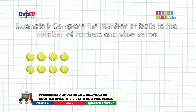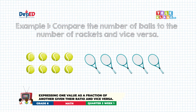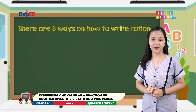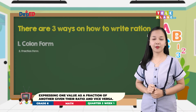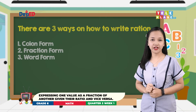Example number one: Compare the number of balls to the number of rockets, and vice versa. The number of balls should be counted first before the number of rockets, since the balls were written first in the given comparison. Now, let us count the number of balls, then the number of rockets. There are three ways on how to write ratio: number one, colon form; number two, fraction form; number three, word form.